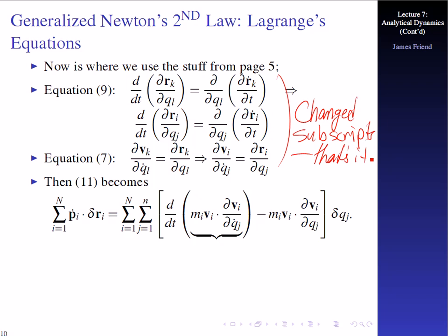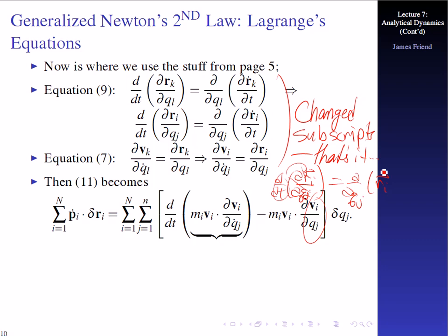Nothing fancy. So then, what we get from the bottom of the last page is the rate of change of momentum — like the negative of the d'Alembert thing — dotted with delta r sub i. This is what we just found: the time derivative of the whole thing minus the other part. This was originally written as the time derivative of partial r sub i with respect to q sub j. All I've done is rearranged and put the time in here, so this is actually the partial with respect to q sub j of r sub i dot. I've just reordered the derivatives. That's all that really is.